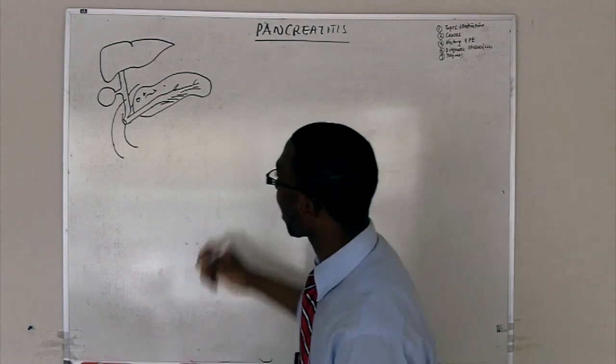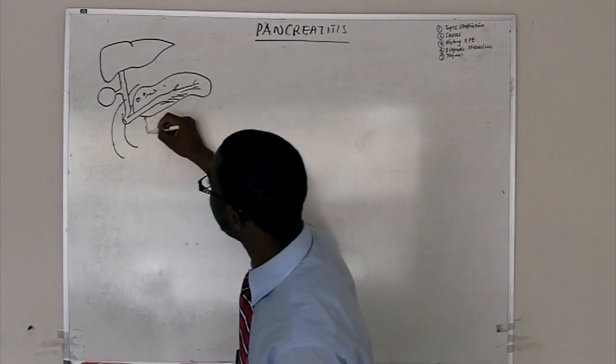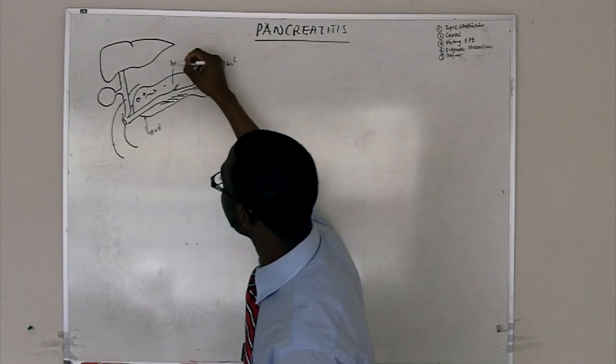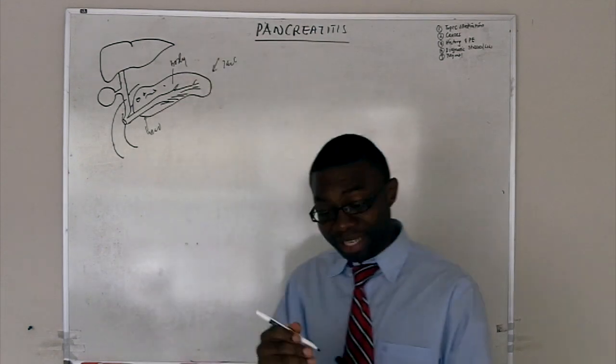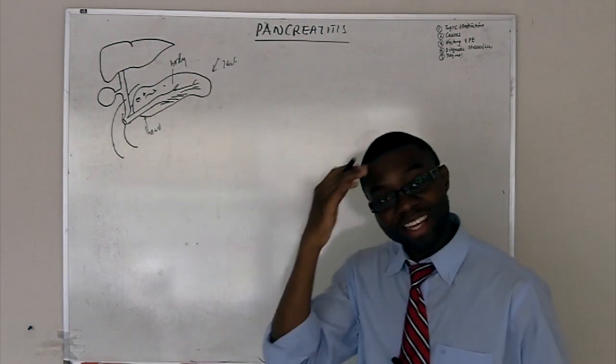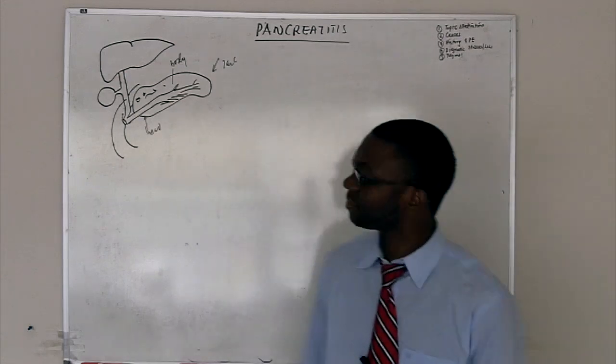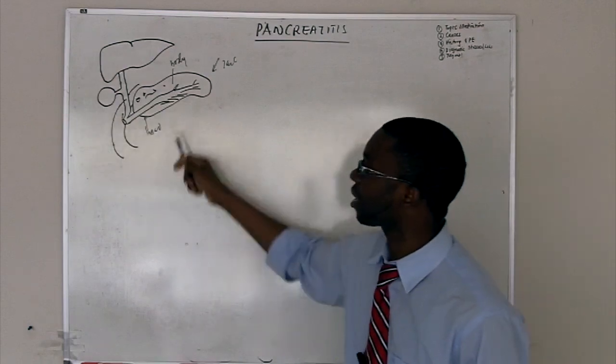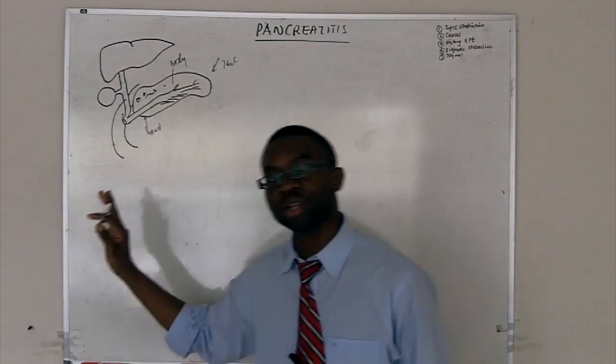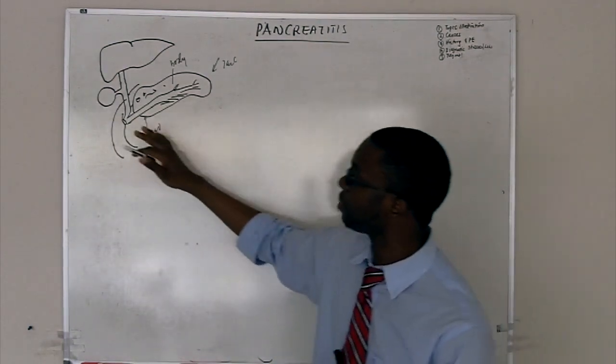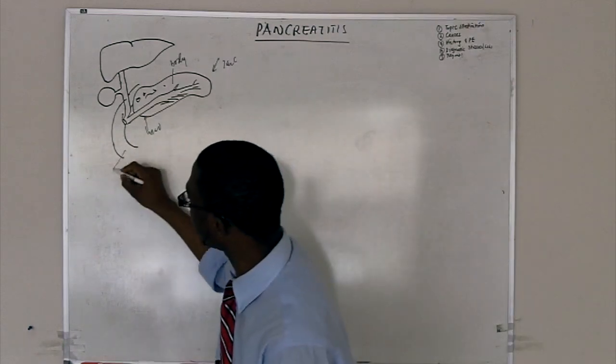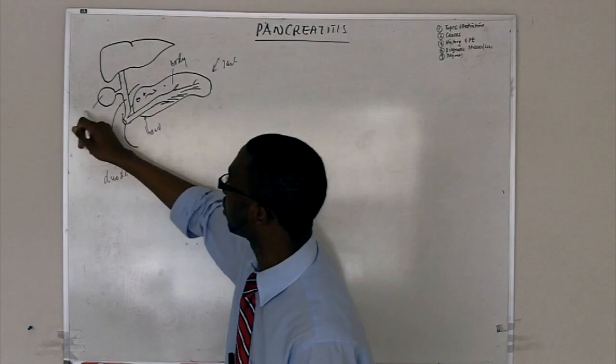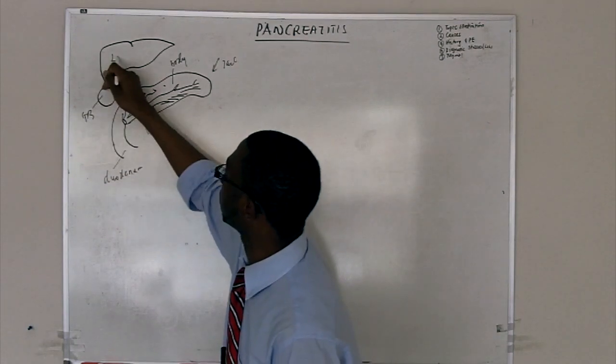The pancreas has the head right over here, has the tail and the body. It's got a head, a body and a tail, it's like a cat. I just drew out the system to illustrate so you have a visualization picture. This will be your duodenum, the biliary tree, the gallbladder, the liver.